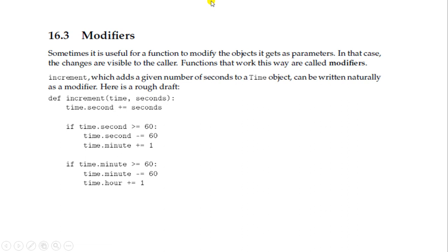The next topic is modifiers. Sometimes it is useful for a function to modify the object it gets as a parameter, in which case the changes are visible to the caller. Functions that work this way are called modifiers. For example, the increment function, which adds a number of seconds to a Time object, is written as def increment(time, seconds): time.second = time.second + seconds. If time.second >= 60, subtract from second and add to minute. If time.minute >= 60, subtract from minute and add to hour.